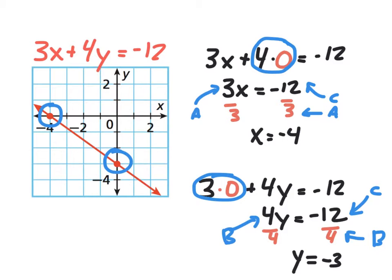In standard form, if you have a picture you can locate the intercepts visually, but you can also quickly find the intercepts without looking at the graph — just by plugging in zeros. Because you always end up with either c divided by a or c divided by b, it's even easier than that. We just locate a, b, and c, do the math, and we have the intercepts.